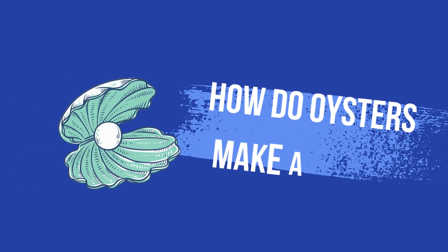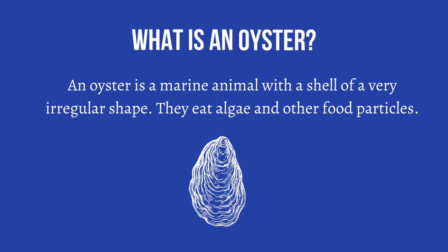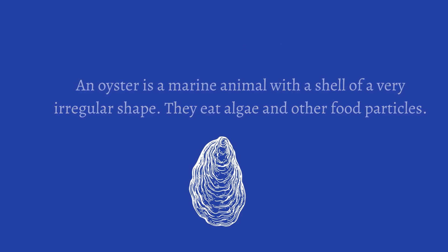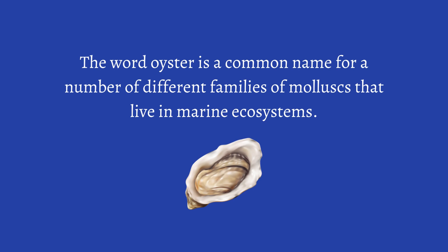How do oysters make a pearl? Before that, we will learn what is an oyster. An oyster is a marine animal with a shell of a very irregular shape. They eat algae and other food particles. The word oyster is a common name for a number of different families of mollusks that live in marine ecosystems.